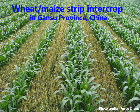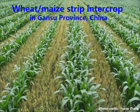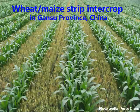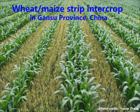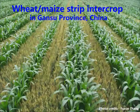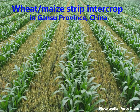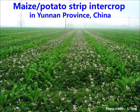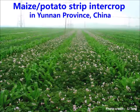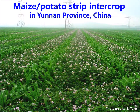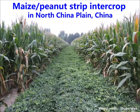Here I show a few pictures illustrating typical intercropping systems in China. For example, this picture shows wheat-maize strip intercrop, which is very typical in Gansu province in China. And this is maize-potato strip intercrop, which is very typical in the North China Plain.